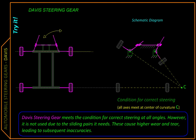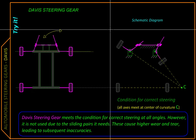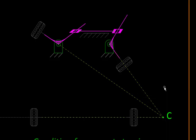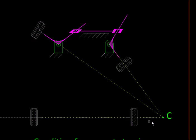Here we are going to look at mechanisms used for steering cars or four-wheelers in general. But before we do that, let's understand the condition for correctly steering such a vehicle. At any instant, a turning vehicle has a definite point or axis about which it is taking a turn, called the center of curvature. If the axis of a wheel passes through this center, that wheel will be in pure rolling. If it does not, the wheel will be dragged sideways, causing greater wear. So the condition for correct steering is that all the axles of the wheels should meet at the center of curvature.